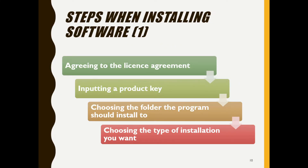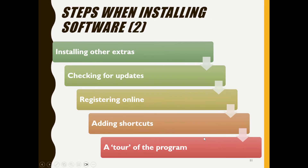When going through the installation process, you usually have to agree to a license agreement — that's what you're doing when you click 'Next, Next, I Agree.' Sometimes you'll have to input a product key. These days, activation is often done online. You then choose a folder where the program will install, and you choose the type of installation — whether it's a full installation or a custom installation.